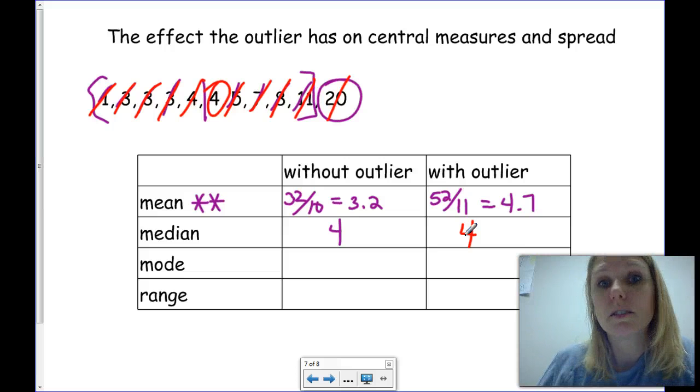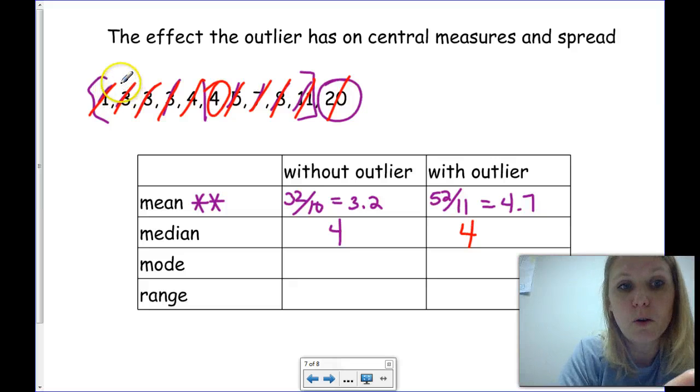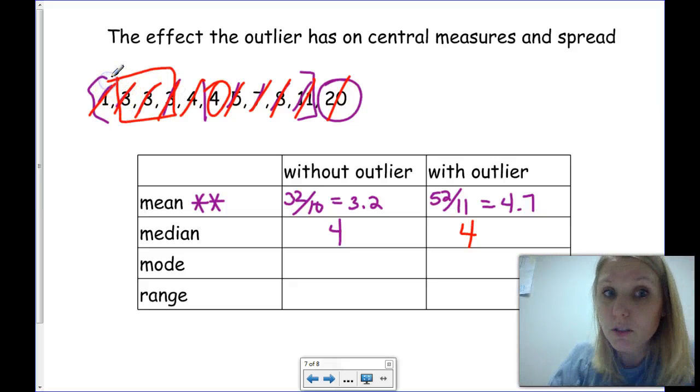What's our mode in this case? The mode, remember, is the most frequent number. And here, we have a mode of 3, because 3 shows up the most. And that's the same in both cases.